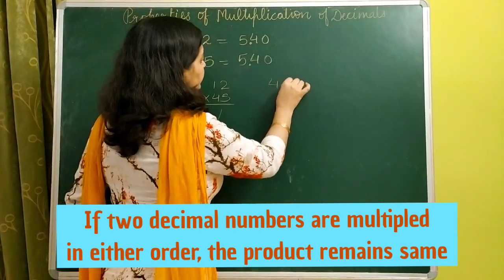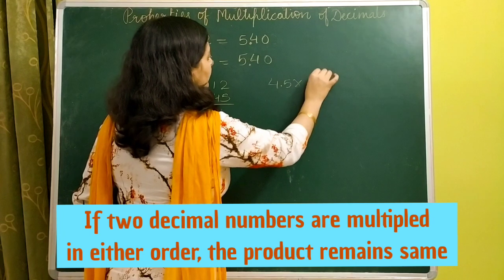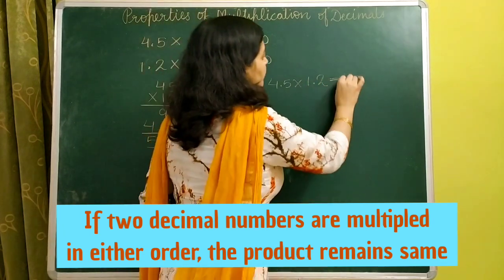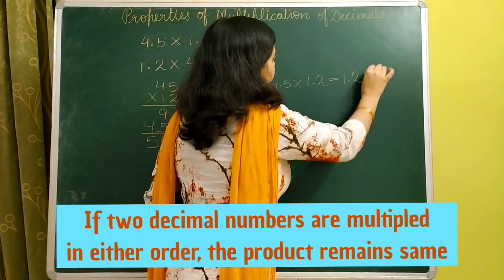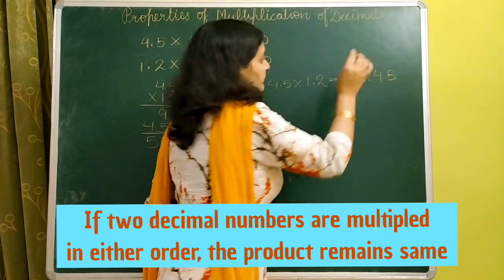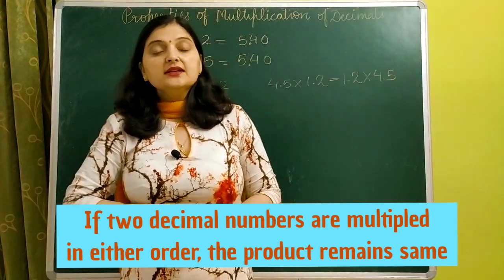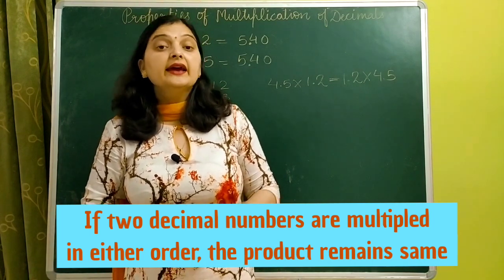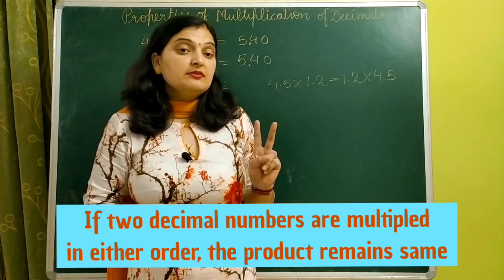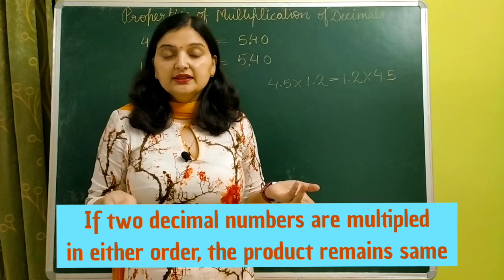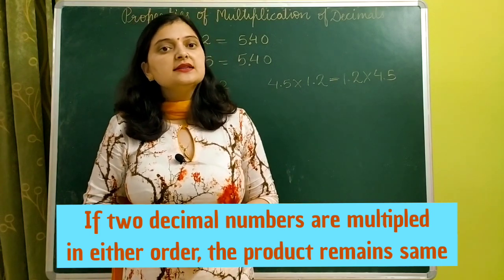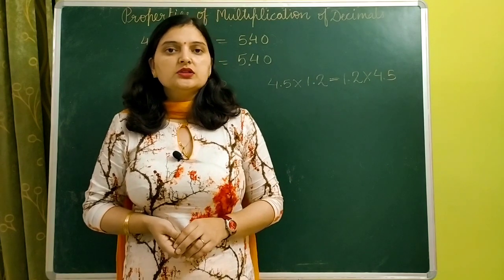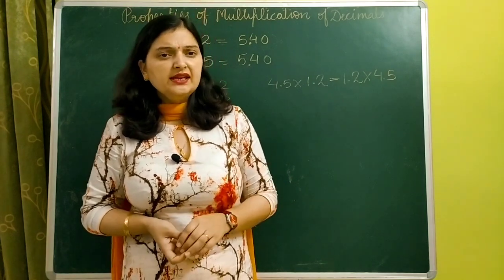So we can say that 4.5 multiplied by 1.2 is equal to 1.2 multiplied by 4.5. Whenever we multiply two decimal numbers in either order, the result will be the same — the product remains the same. This is our first property.